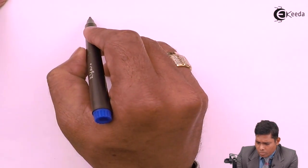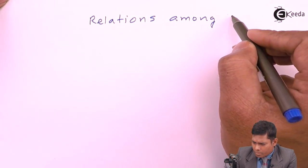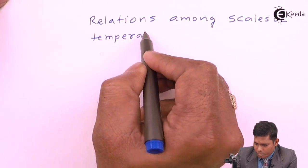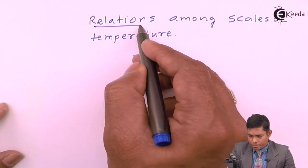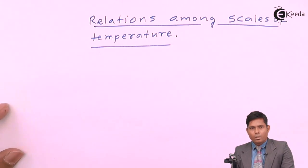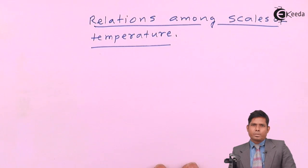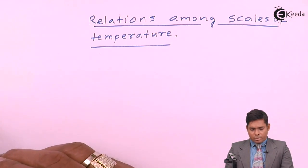Now, can we relate all three scales to each other? The answer is yes — we can relate the three scales of temperature. The temperature in one scale can be converted into the equivalent temperature in another scale. There is a formula for this: the relations among the scales of temperature.